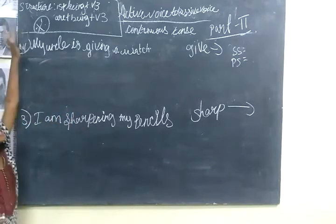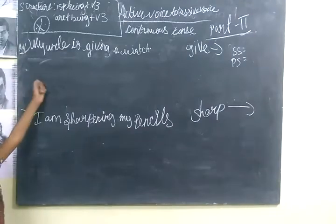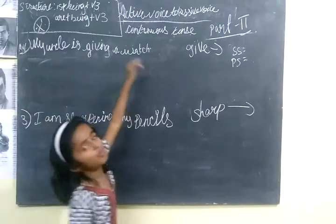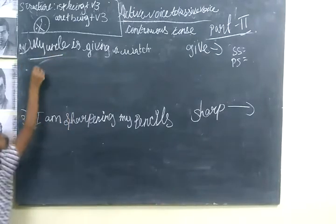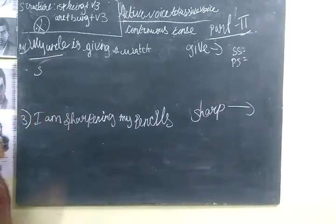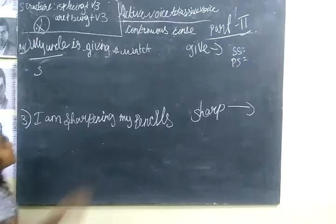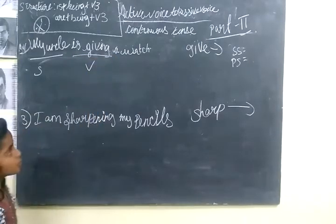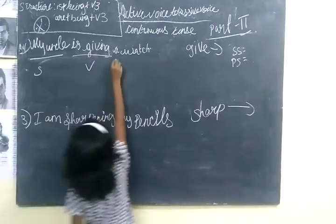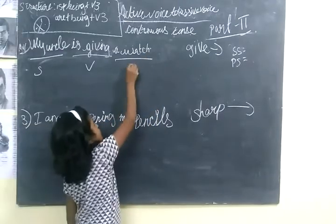In this structure, the important thing which you need to see — the first example: 'My uncle is giving a watch.' In this, 'my uncle' is the subject, 'is giving' is the verb, and 'a watch' is the object.